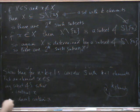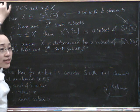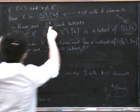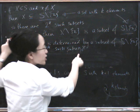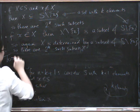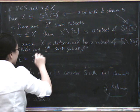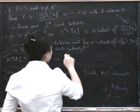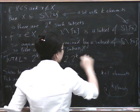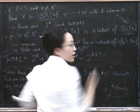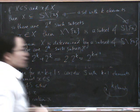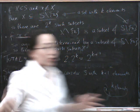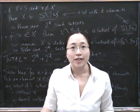So there are two cases. Either X is in the subset, running out of time, in which case there are 2 to the k of them, or X is in it, in which case there are 2 to the k of them. So the total is 2 to the k plus 2 to the k, but that's just 2 times 2 to the k, which is 2 to the k plus 1, which is what we were trying to do for the induction step. Finish it off. So by induction the result is true for all n in the natural numbers.